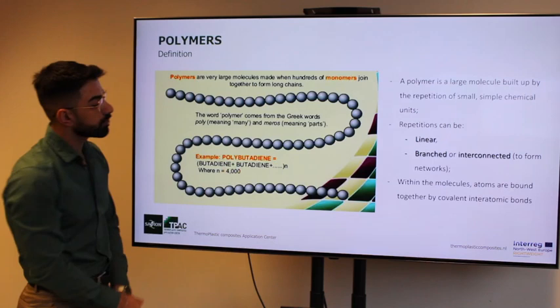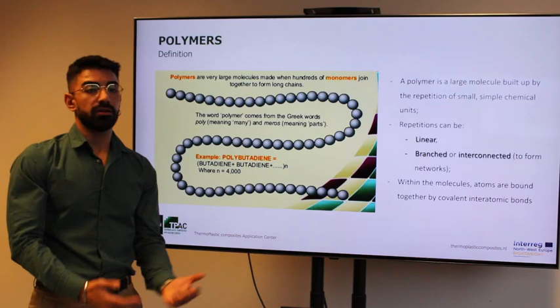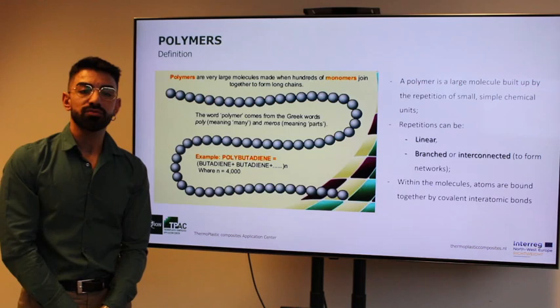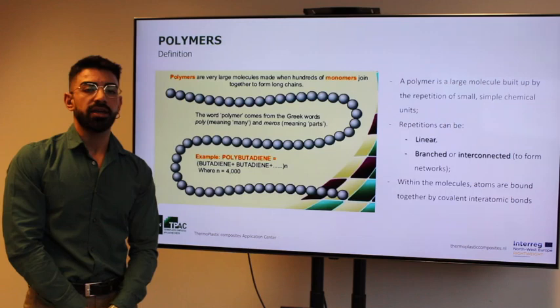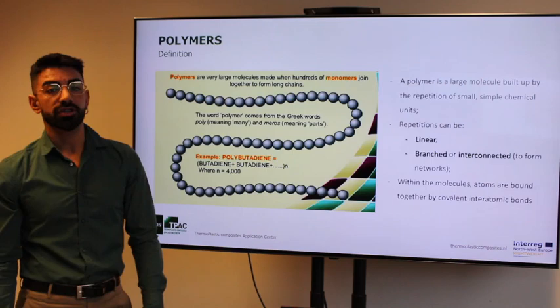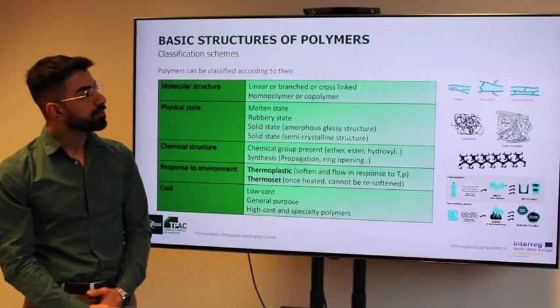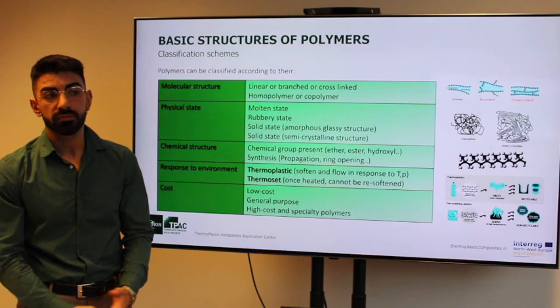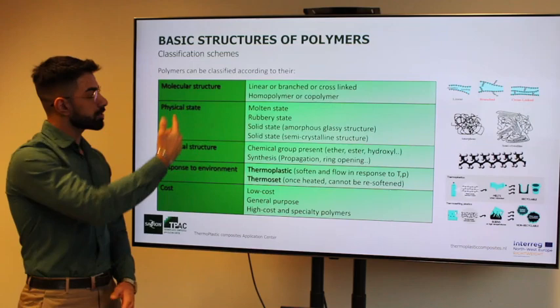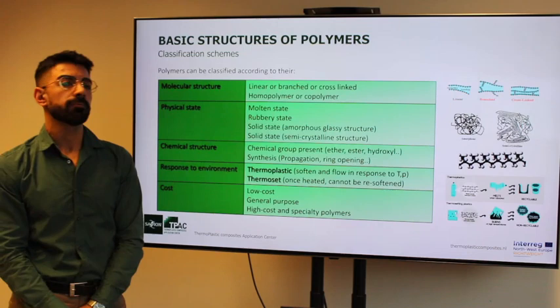The repetition can be linear, branched, or also interconnected to form networks. Within each molecule, the atoms are bound together by covalent interatomic bonds. For a carbon chain polymer, the backbone of each chain is a string of carbon atoms. Within the polymer field, several classifications can be given to differentiate all the polymers: molecular structure, physical state, chemical structure, response to environment, and cost.